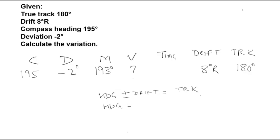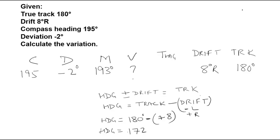So, it will become heading is equal to track minus drift. Now, for drift the sign will be minus in case of left and plus in case of right. So, in this heading will be equal to 180 degrees minus, as this is positive that is 8 degrees right, plus 8. So, heading will be equal to 172 degrees. This is our true heading.